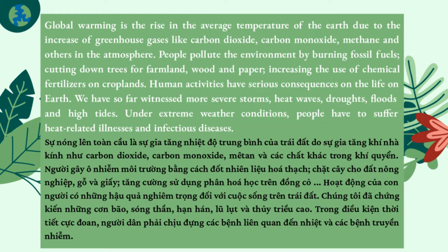Global warming is the rise in the average temperature of the Earth due to the increase of greenhouse gases like carbon dioxide, carbon monoxide, methane and others in the atmosphere. People pollute the environment by burning fossil fuels, cutting down trees for farmland, wood and paper, and increasing the use of chemical fertilizers on croplands.